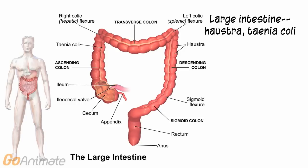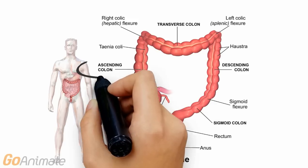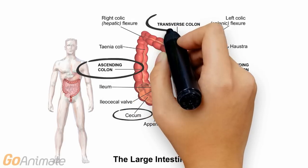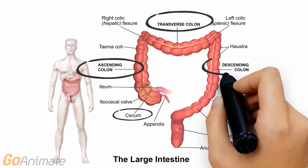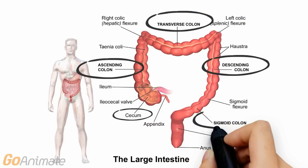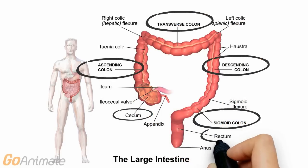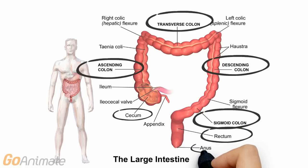The large intestine has a different structure than the small intestine. It contains large pouches called haustra and a long band of smooth muscle called the tinea coli. The major parts of the large intestine include the ascending colon, transverse colon, descending colon, sigmoid colon, rectum, and anus.